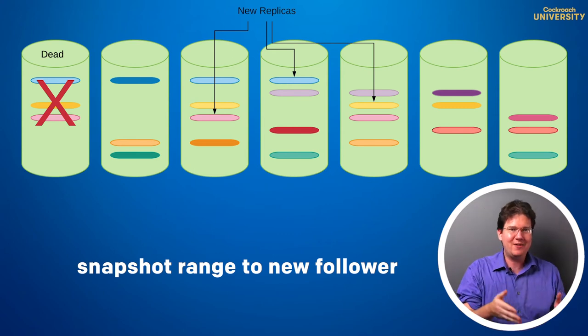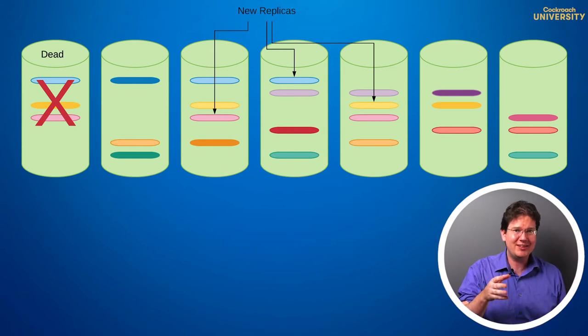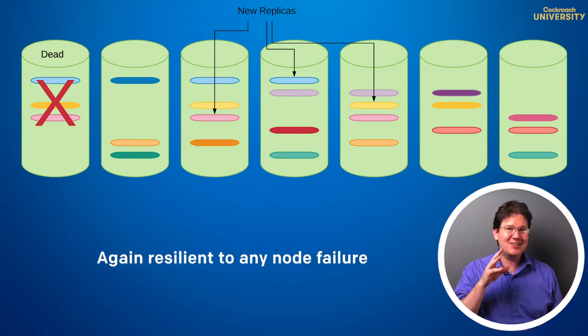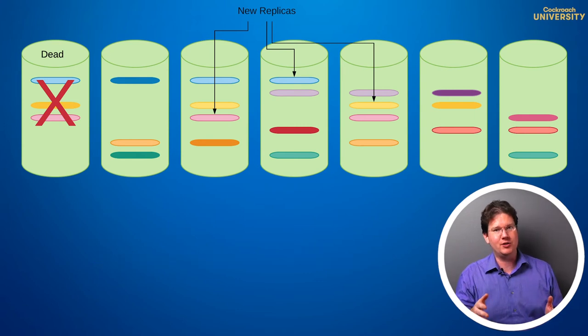the cluster has actually healed itself. All ranges are again fully replicated in spite of the lost node. The cluster is actually once again resilient, and could tolerate another node failure without loss of availability. It's incredible! As long as the cluster doesn't suffer a second lost node before declaring the first one dead and up-replicating. Because guaranteeing availability in the face of two simultaneous node failures would be mathematically impossible.